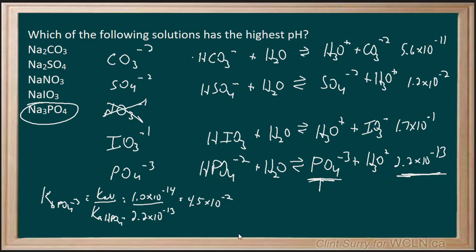The next closest one would be for the carbonate, and that would be Kb for CO3 minus 2 equals Kw over Ka of HCO3. That's 1.0 times 10 to the minus 14 over 5.6 times 10 to the minus 11, which is 1.8 times 10 to the minus 4.